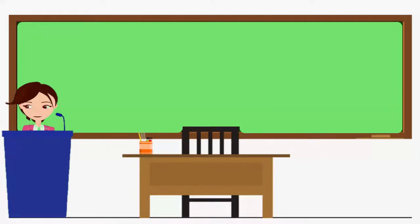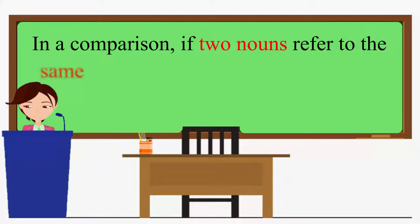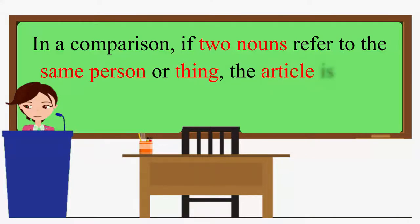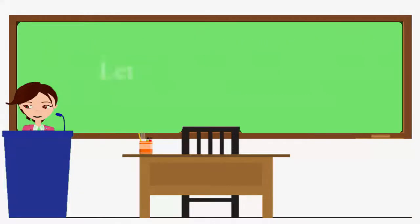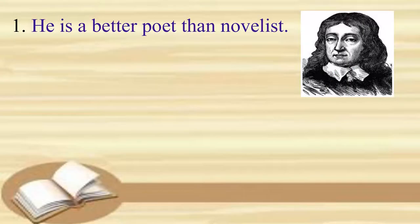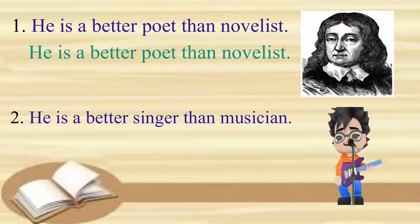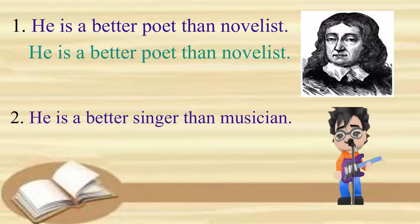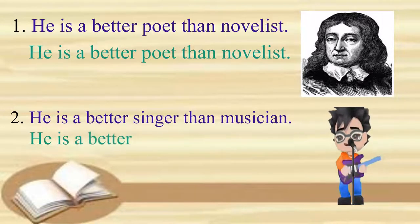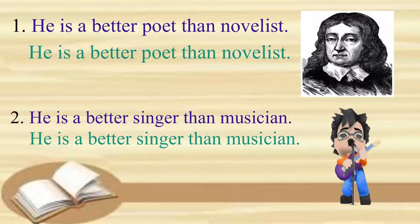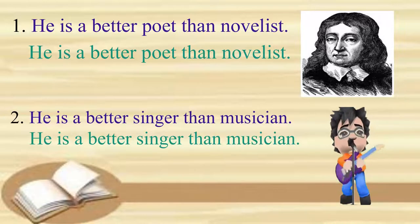Now, if we are comparing something and the two nouns refer to the same person or thing, the article is used before the first noun only. Let us see these sentences and please repeat after me. He is a better poet than novelist. He is a better singer than musician. Here, both nouns refer to the same person.